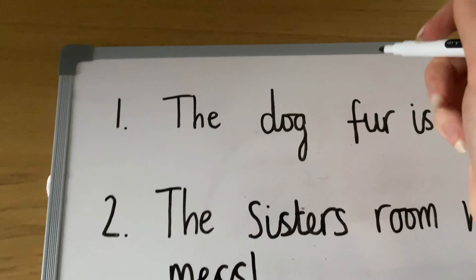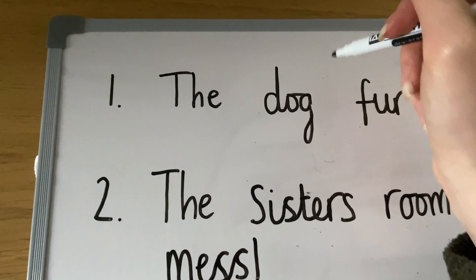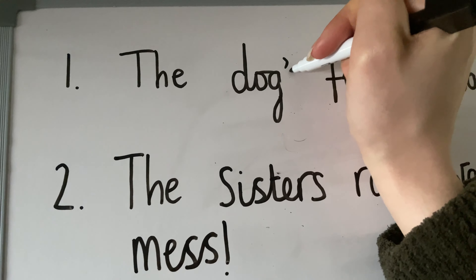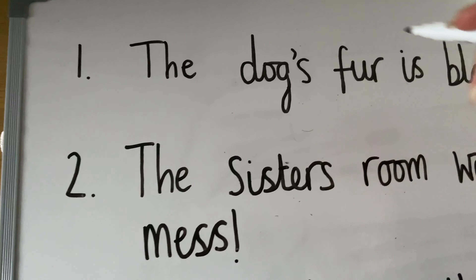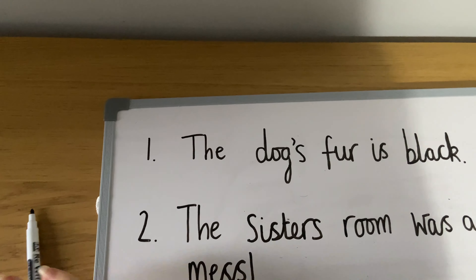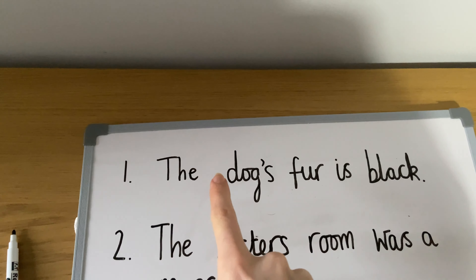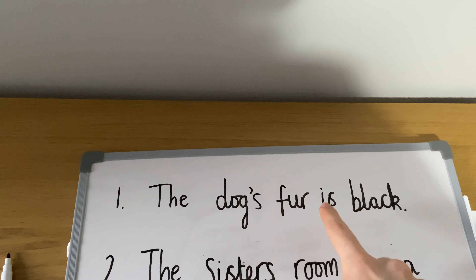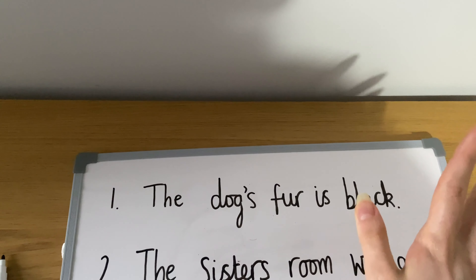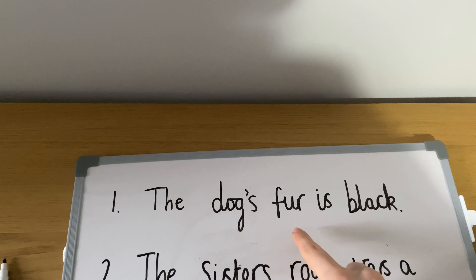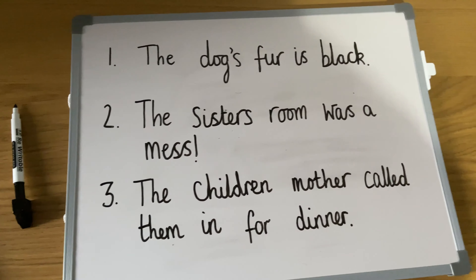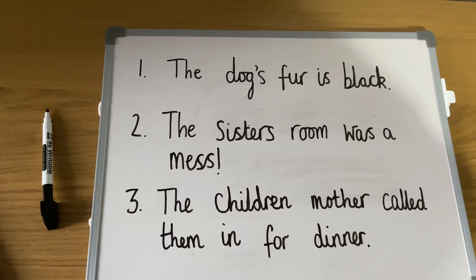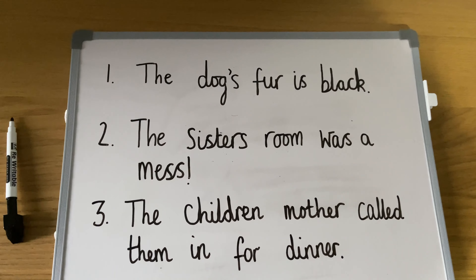We need to add an apostrophe here, and our s here. So it now reads: the dog's fur is black. It shows that there's only one dog and that their fur is black. If the sentence we are talking about has more than one subject...